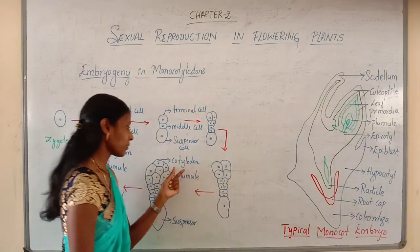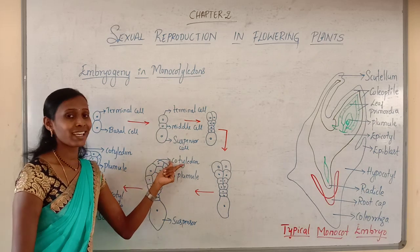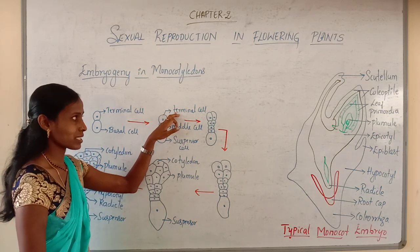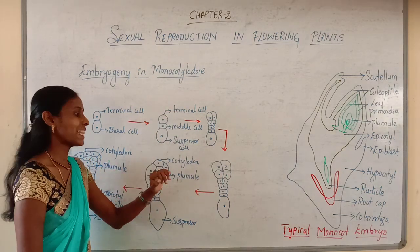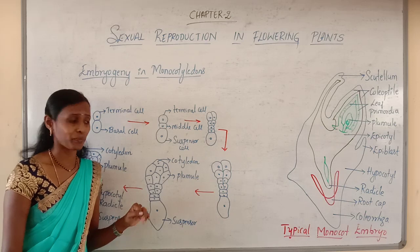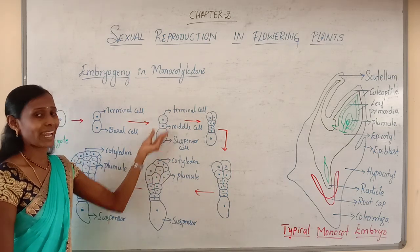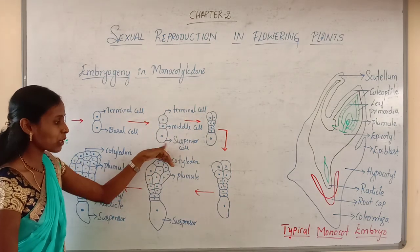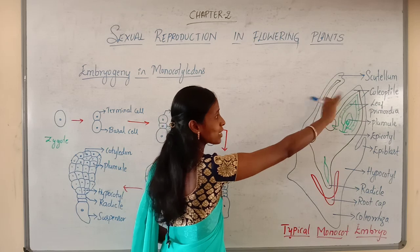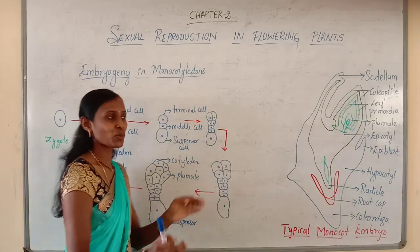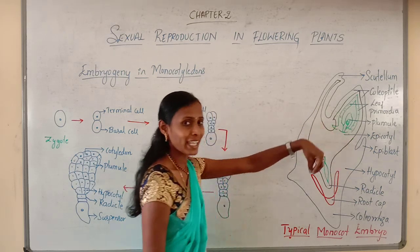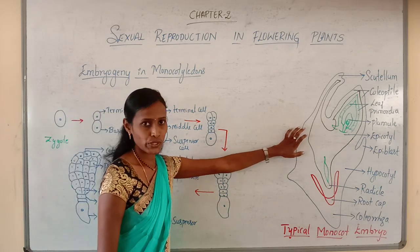This scutellum will grow rapidly and push the plumule towards one side. That is why the plumule will come to lie in a depression — it is in a depression because of the rapid growth of the scutellum. So after a series of divisions, the terminal cell forms the plumule and a single cotyledon called the scutellum.